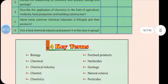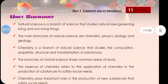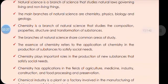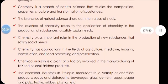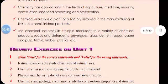So far in unit one we've seen about these industries. Now let's revise and do some exercises. In unit one we have seen about the definition of natural science, the main branches of natural science such as chemistry, physics, biology, and geology, the definition of chemistry, the interaction between different branches of natural science, the roles played by chemistry in our society, and about chemical industry.